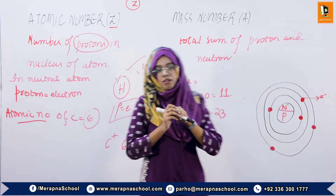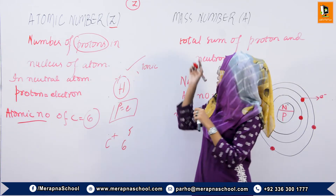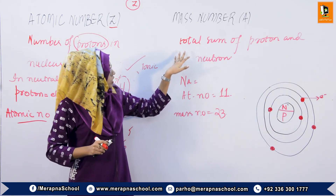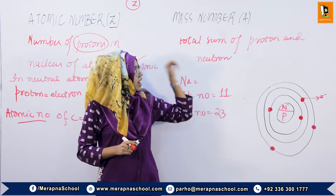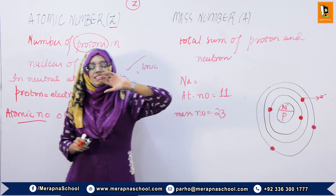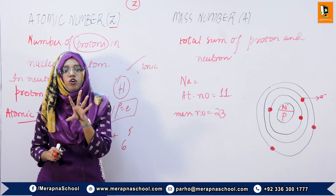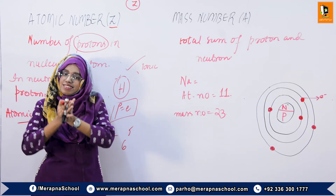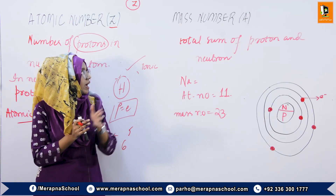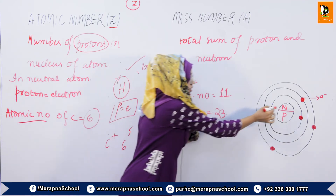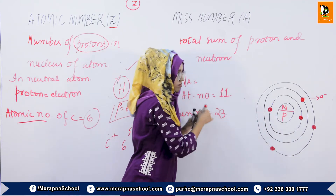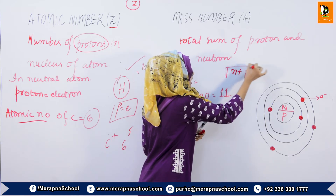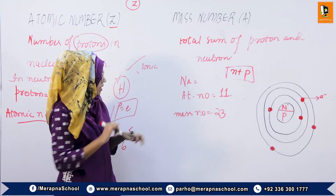Now let's look at mass number. What is mass number? The total sum of protons and neutrons — किसी भी atom के nucleus के अंदर मौजूद number of protons और neutrons के sum को बोलते हैं हम mass number. Number of neutrons और number of protons — इन दोनों के sum को हम बोलेंगे कि उस atom का mass number है।